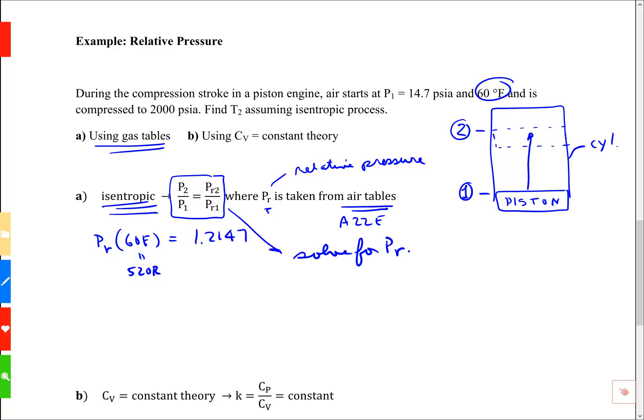Solve for PR2, that's going to be PR1 times P2 over P1. PR2 is 1.2147 times our pressure ratio, 2000 divided by 14.7. This is an ideal gas calculation so these quantities have to be absolute. 2000 PSIA for the final condition, 14.7 PSIA for the initial condition. Those are indeed absolute pressures. When I compute that I get 165.3. This is the final value of the relative pressure. We can go back to the table at PR equals 165.3 and look up T2.